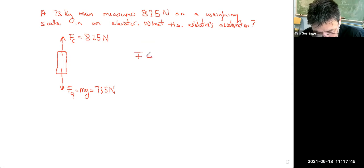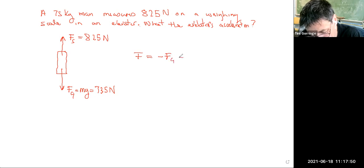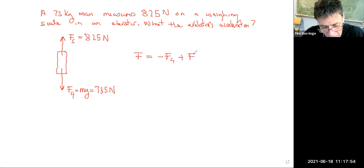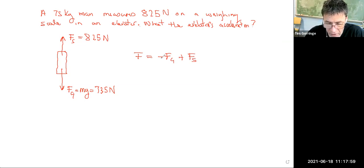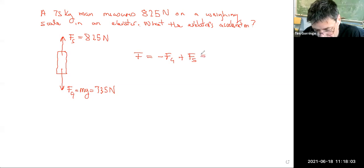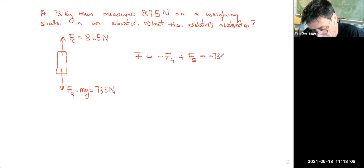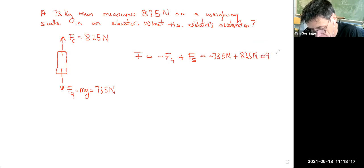The net force is the sum of the forces acting. There's a downwards force of gravity and an upwards force of the scales. Fg and Fs are the sizes, with minus and plus signs for the directions. So we feed the numbers in: minus 735 newtons plus 825 newtons. That's 90 newtons upwards — that's the net force acting on the man.